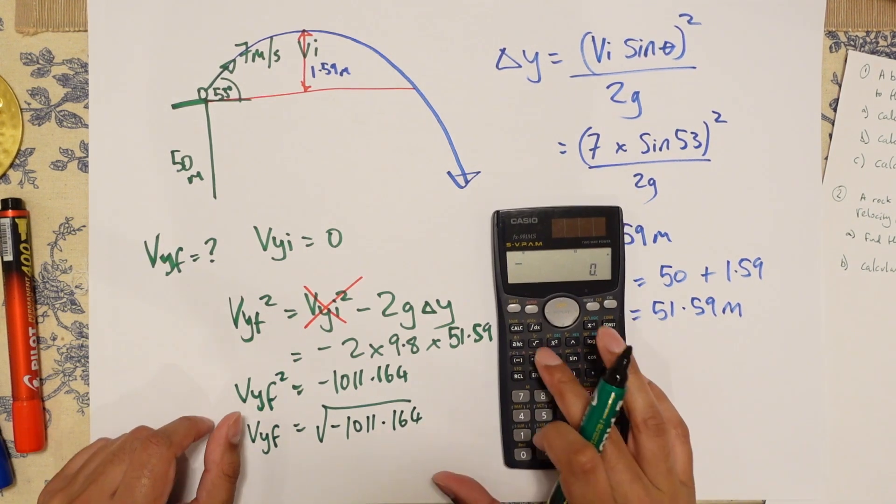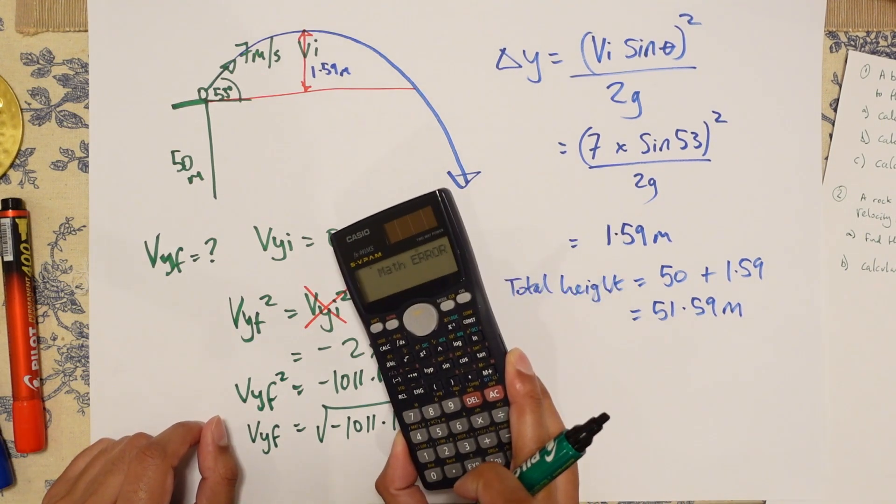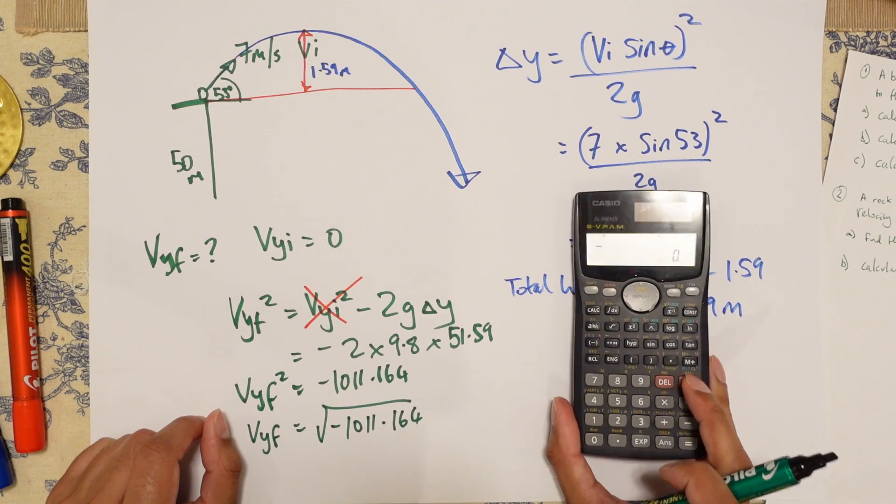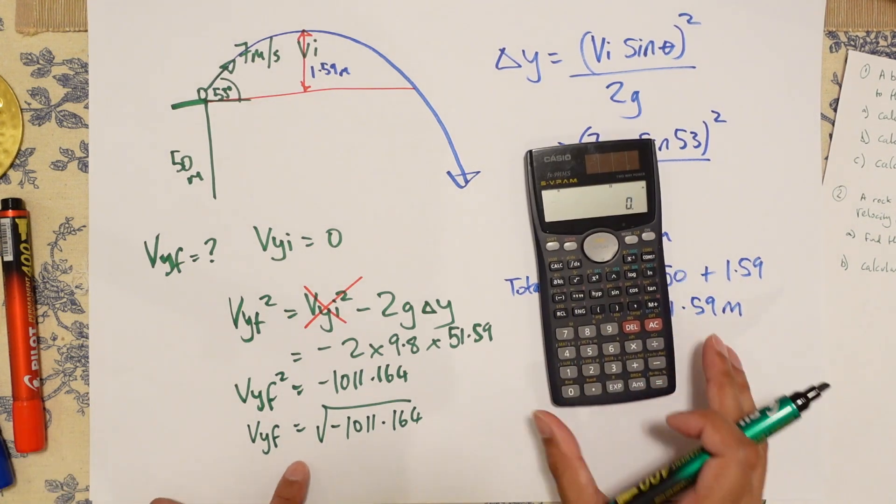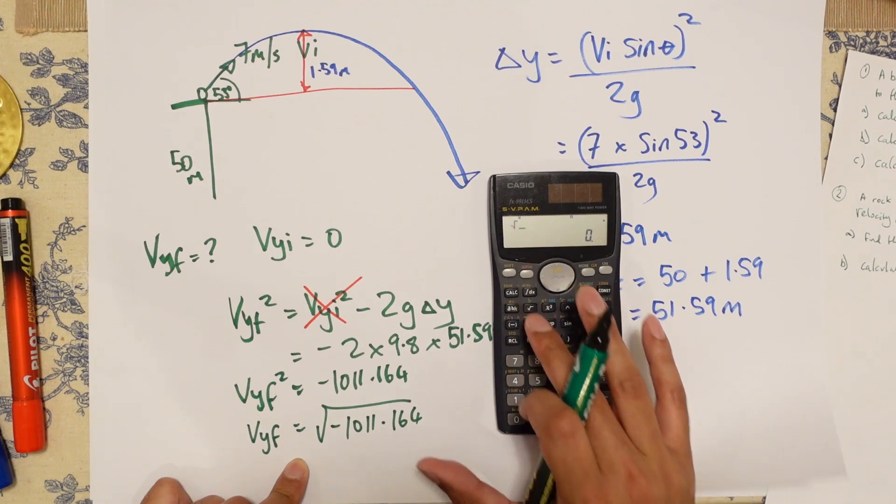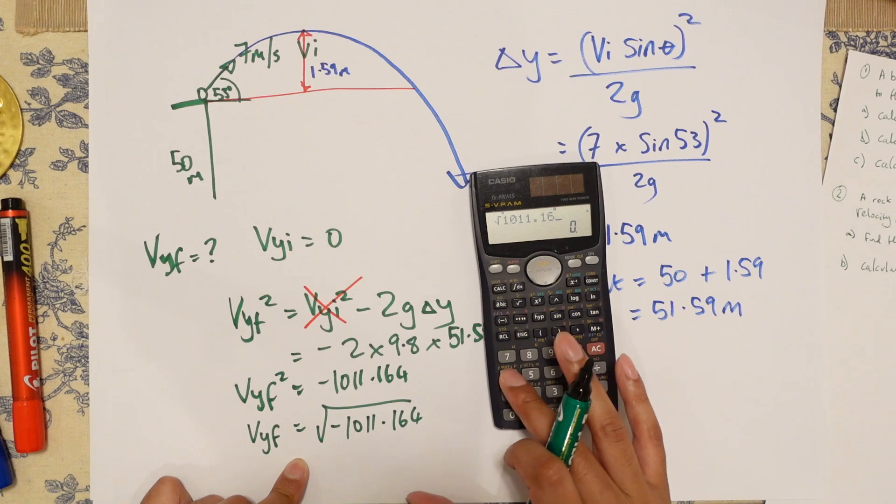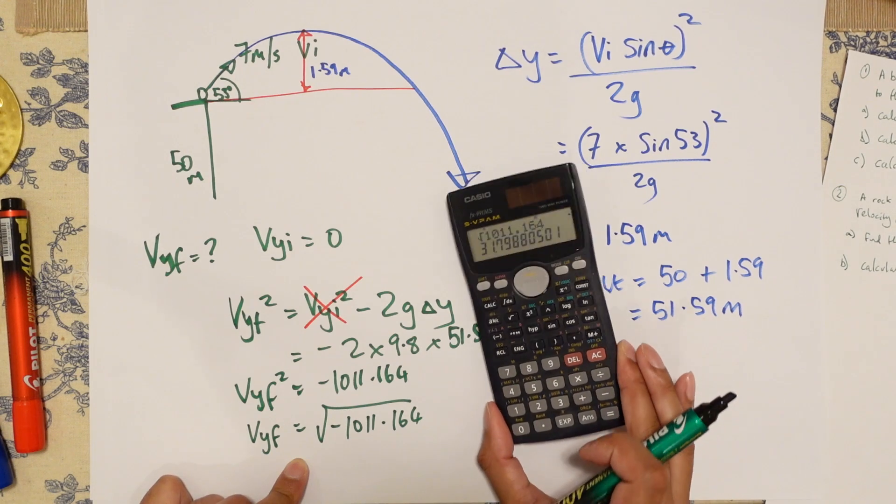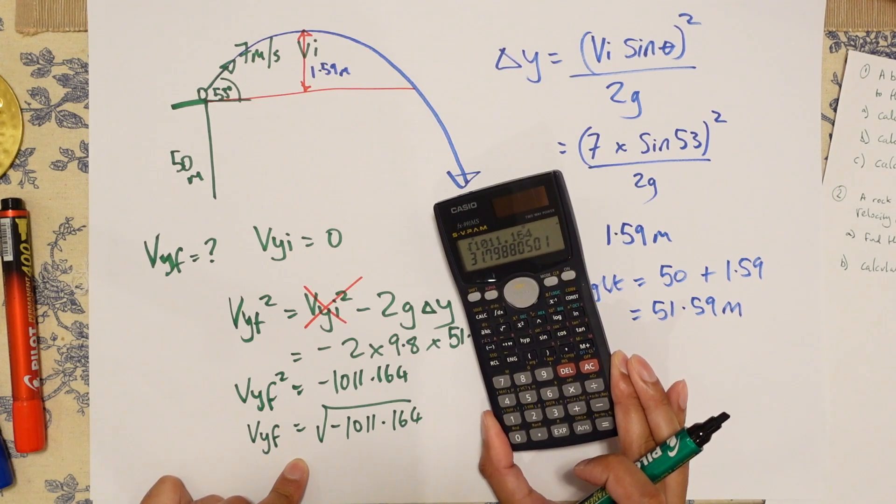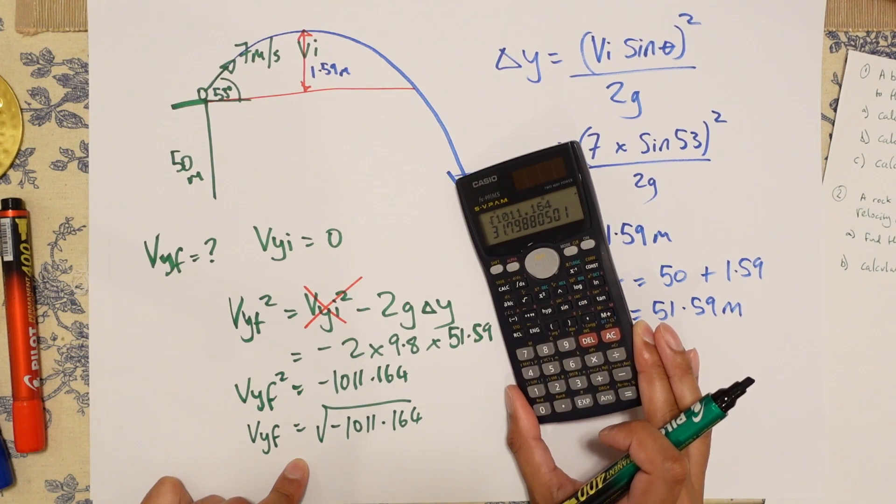So VYF is equal to the square root of... You might want to take off that minus. If I do that, I get a math error on this particular calculator. So I'm going to just take off that minus. So I end up with 1011.164. And I get 31.87988. But you round up 31.8 meters per second.